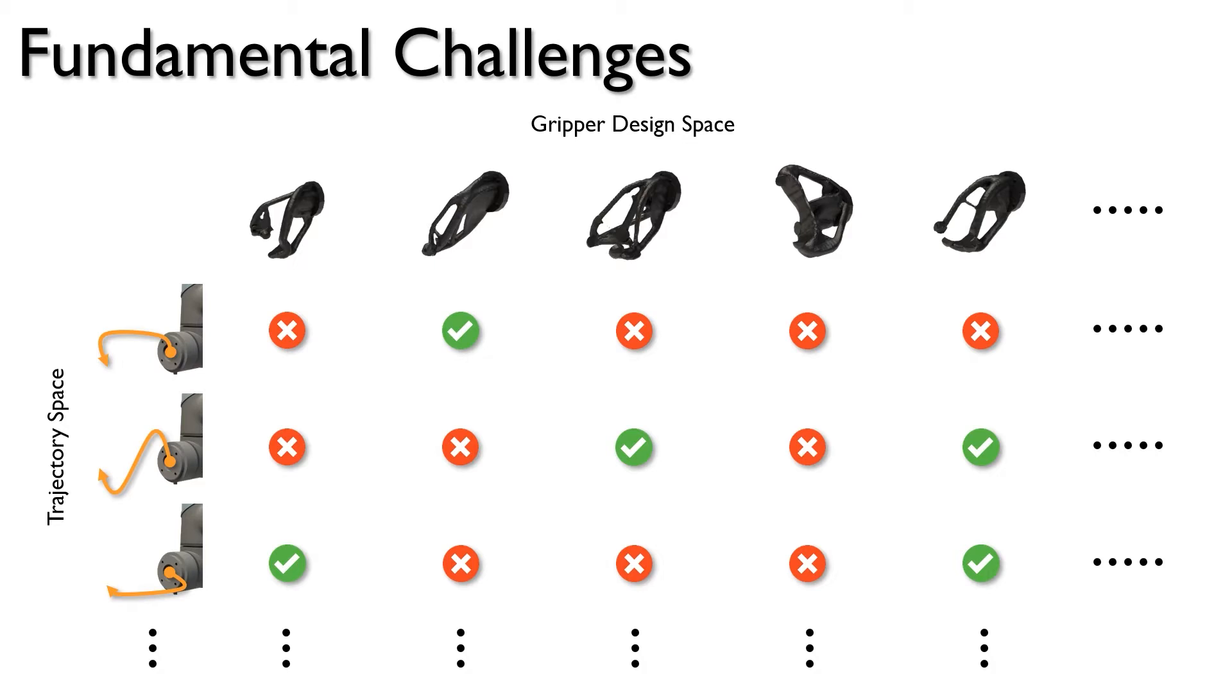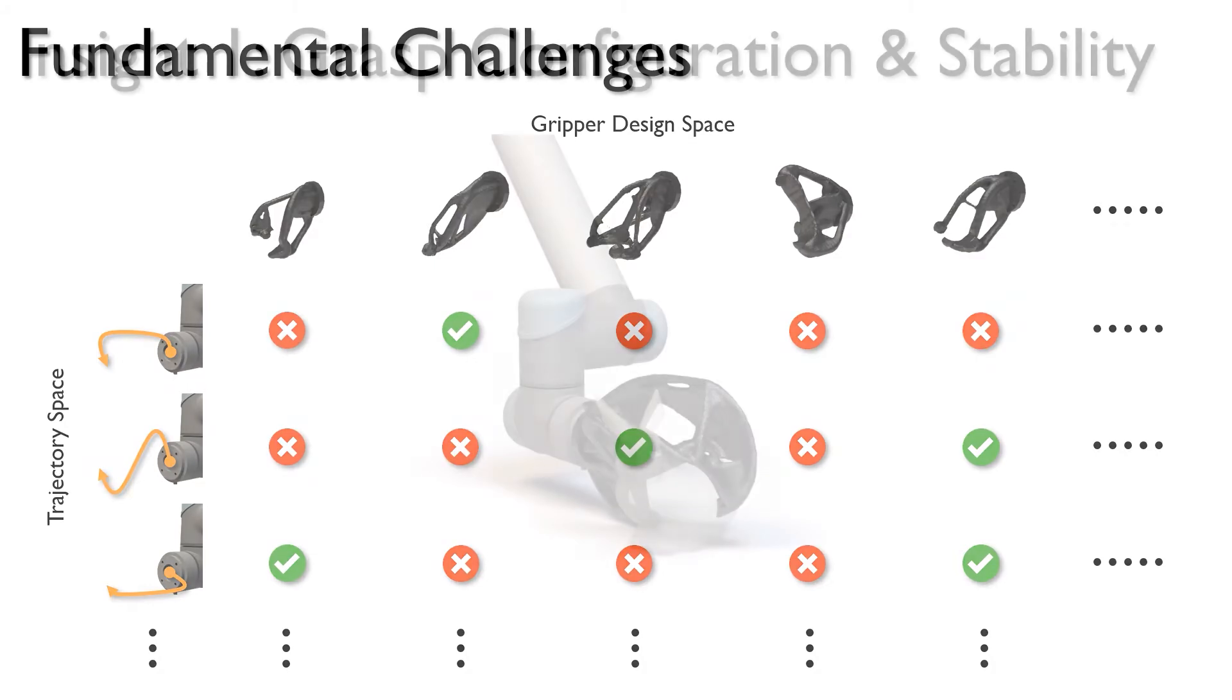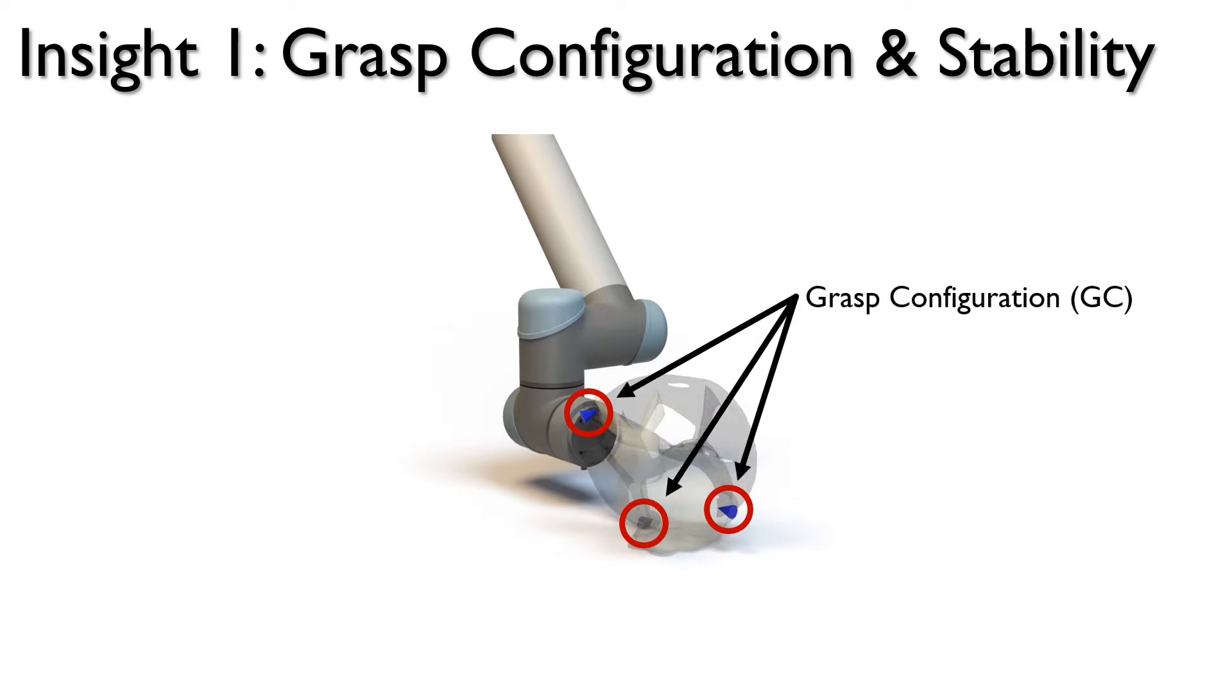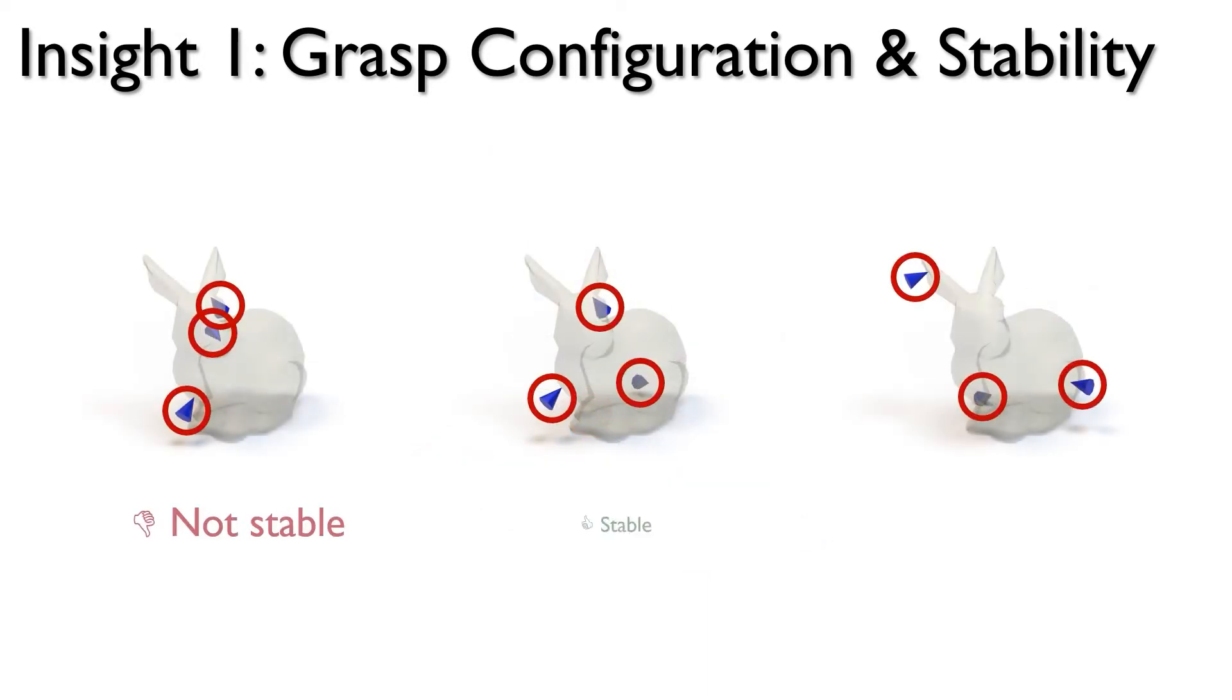We address these challenges with two key insights. Our first insight is that the points where the gripper makes contact with the object are essential for understanding the object's stability. We call this set of points the grasp configuration or GC. We observe that we can determine whether or not an object is stable by only analyzing the GC.